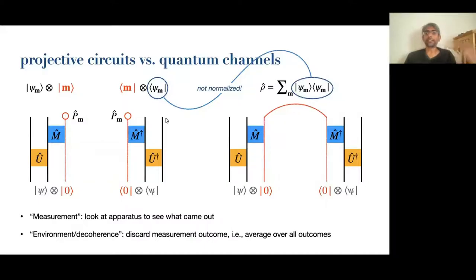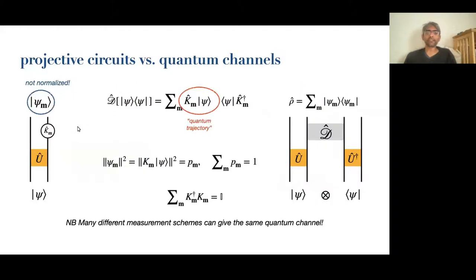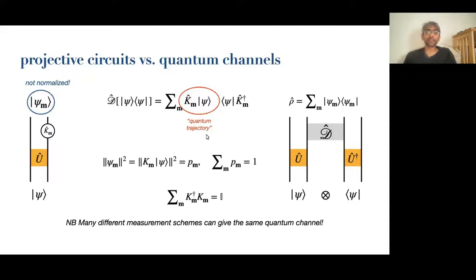Tracing over the environment gives you decoherence, and it takes a pure state to a mixed state. In both cases, you can avoid explicitly referring to the state of the environment and compress your description to, in one case, a quantum trajectory, and in the other case, a quantum channel. A quantum channel is a sum over quantum trajectories — over measurement records that you could have gotten if you had looked at the environment. When you trace over the environment to get the quantum channel, you're losing information, because there are many different ways of measuring the system that, when you trace over them, give rise to the same quantum channel. What I'm going to talk about today is things that happen in individual quantum trajectories that the quantum channel is blind to.